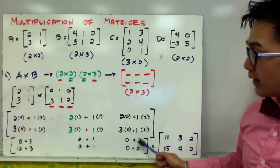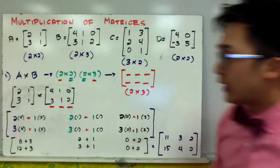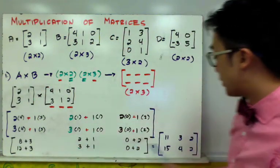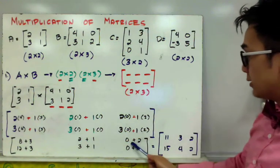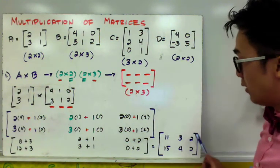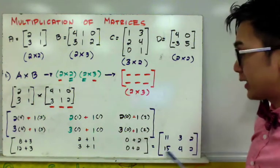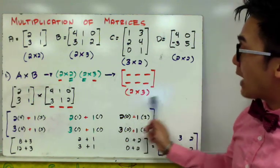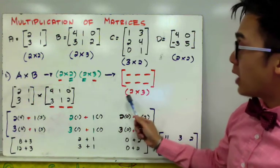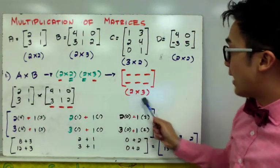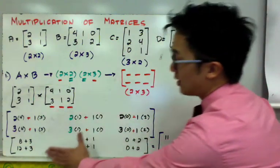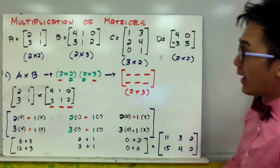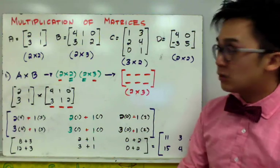Further simplifying our matrix gives us the product of A times B. The first row is: 8 plus 3 equals 11, 2 plus 1 equals 3, and 0 plus 2 equals 2. For the second row: 12 plus 3 equals 15, 3 plus 1 equals 4, and 0 plus 2 equals 2. True to our first verification, the product of A times B should be a 2 by 3 matrix, and after doing the tedious steps, we now have a 2 by 3 matrix with these specific entries. That's how we multiply two matrices with different orders.